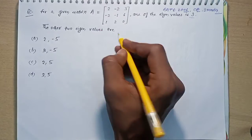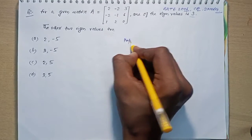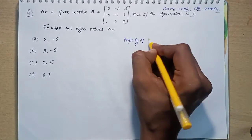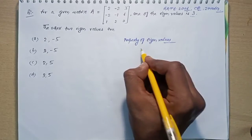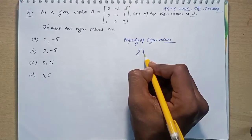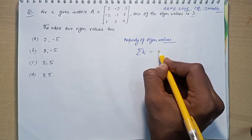In order to solve this problem, remember a property of eigenvalues: the sum of eigenvalues will be equal to the trace of the given matrix.